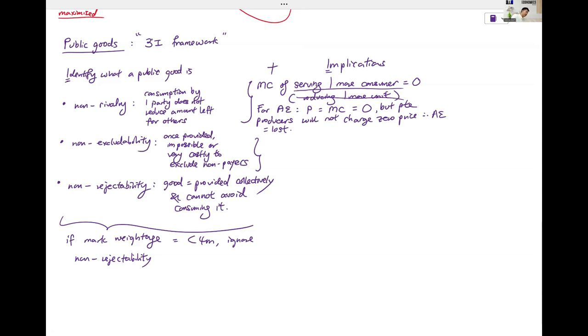Non-excludability, if I don't pay, you cannot exclude me. So there is a free rider problem. No one wants to pay. I'll wait for my neighbor to pay. You install the street lighting. I will enjoy the illumination. Free rider problem.